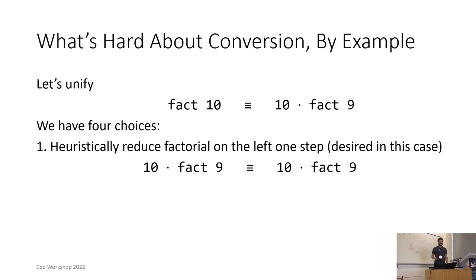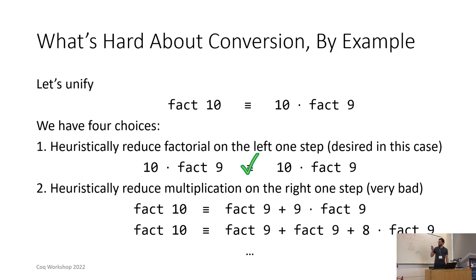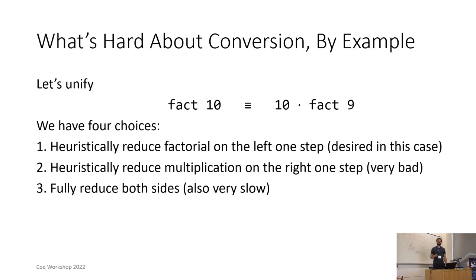Suppose you want to unify 10 factorial with 10 times 9 factorial. You have four choices. You can heuristically reduce factorial on the left by one step, turning 10 factorial into 10 times 9 factorial. This is what you want to do in this case. You can heuristically reduce the multiplication on the right by one step. This is very bad in this case because you turn 10 times 9 factorial into 9 factorial plus 9 times 9 factorial. Maybe you can see where this is going. But if you tell Bob to do this it might decide to do this and fully reduce 10 times 9 factorial to a numeral. This is very slow. Only slightly less bad is if you decide to fully reduce both sides from the very beginning.